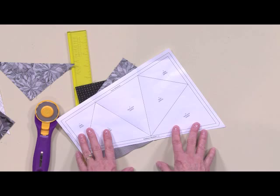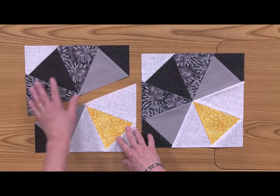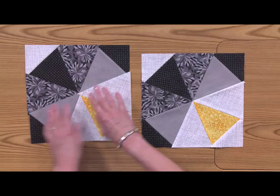When you're completely done with the section, then you'll go ahead and trim on this outside line. Here is a completed section one and section two. And to make the block, you'll join both of these sections together. So your finished block will look like this.